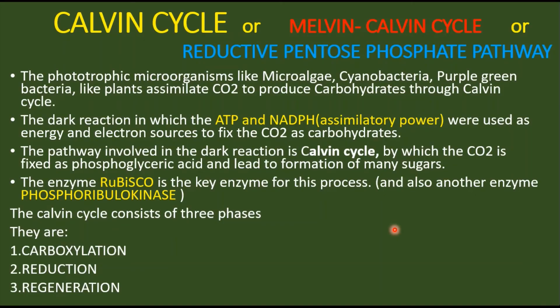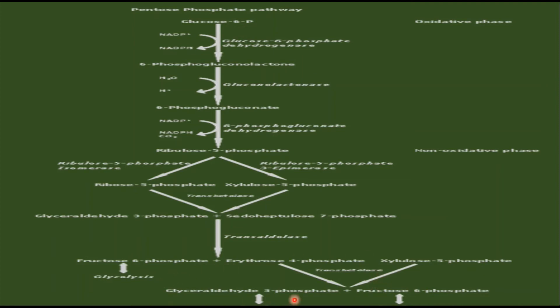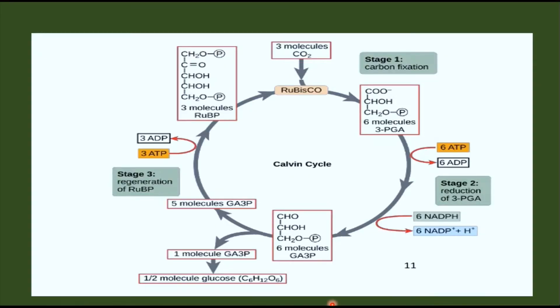The regeneration step can be understood by reference to the pentose phosphate pathway, discussed in detail in the respiration topic. The Calvin cycle is also called the reductive pentose phosphate pathway, because it is essentially the reverse of the pentose phosphate pathway. In the pentose phosphate pathway, glucose 6-phosphate gives rise to glyceraldehyde 3-phosphate and fructose; here, the reverse occurs.